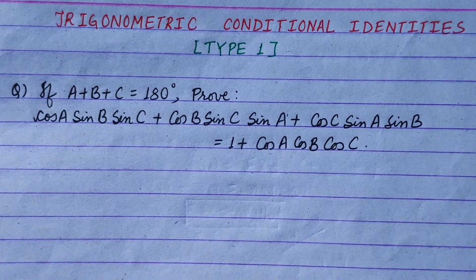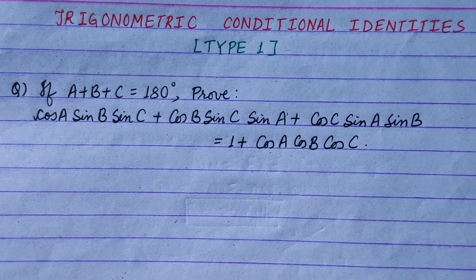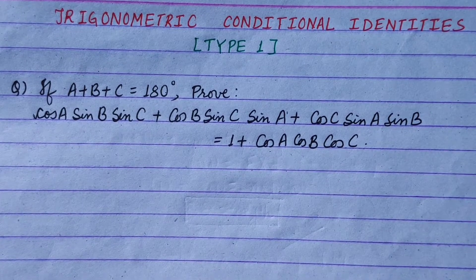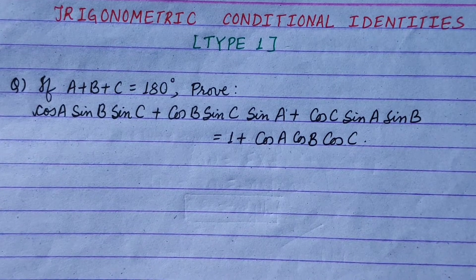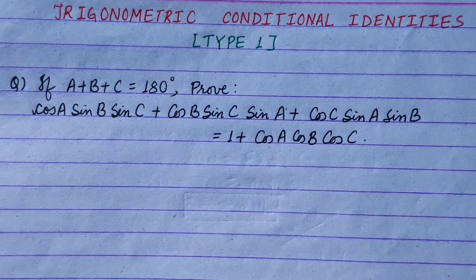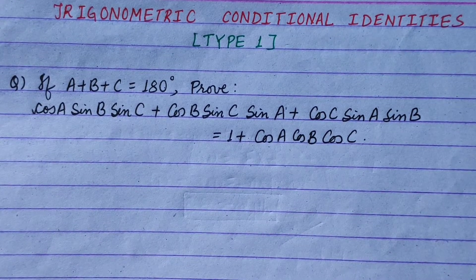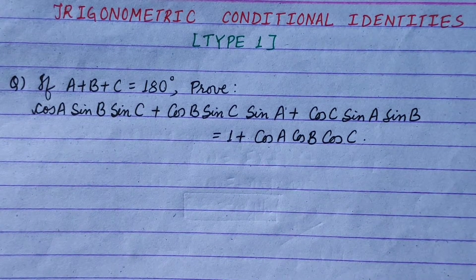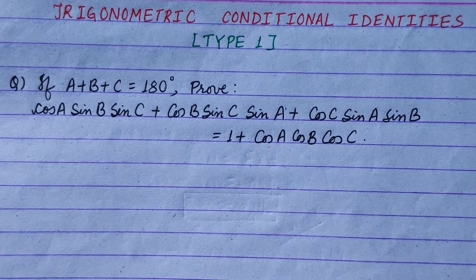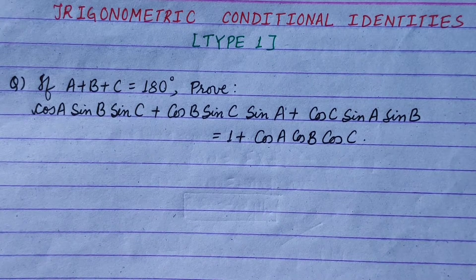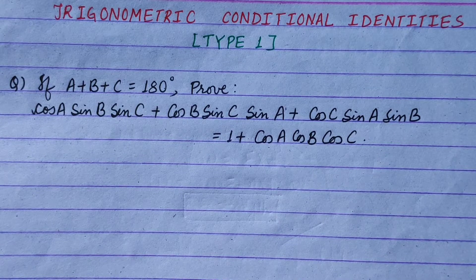Hi everyone. Today I am going to talk about trigonometric conditional identities. Question: if a plus b plus c equals 180 degrees, prove that cos a sin b sin c plus cos b sin c sin a plus cos c sin a sin b is equal to 1 plus cos a cos b cos c.